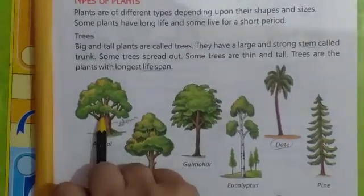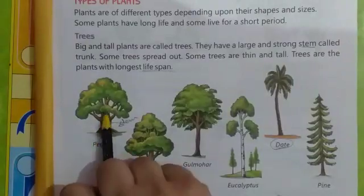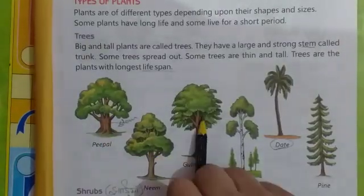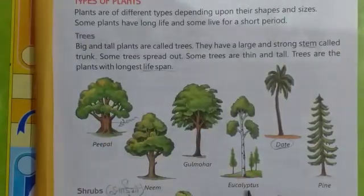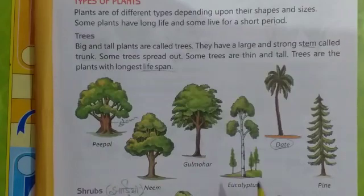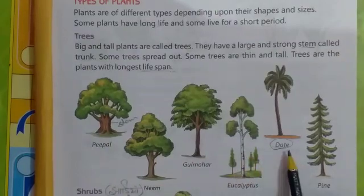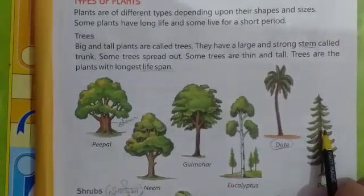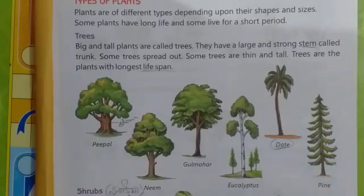Peepal is a tree. Neem is a tree. Gulmohar is a tree. Eucalyptus is a tree. And Pine is also a tree.